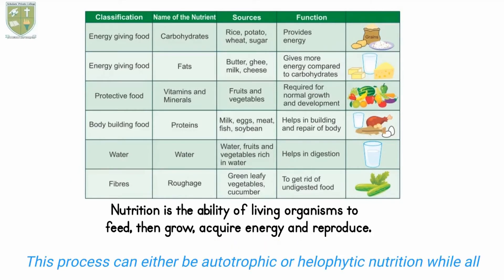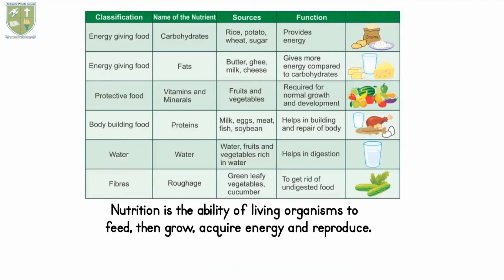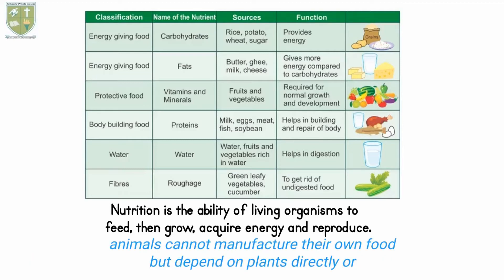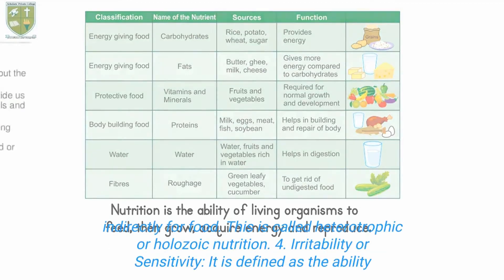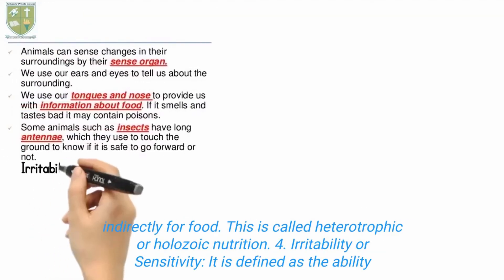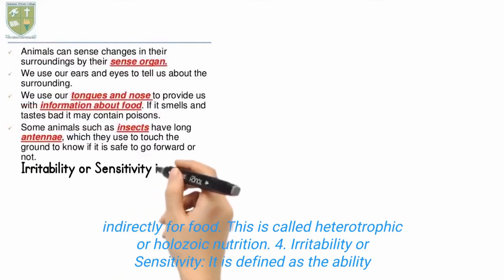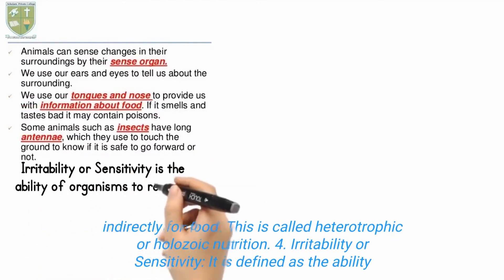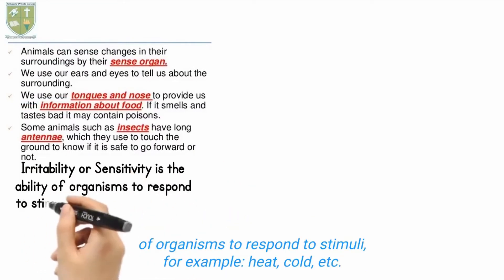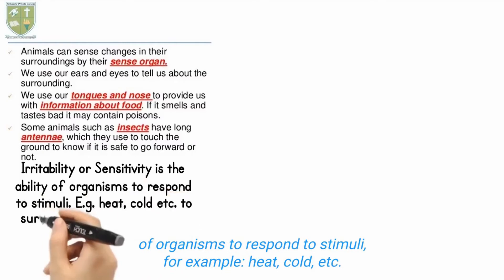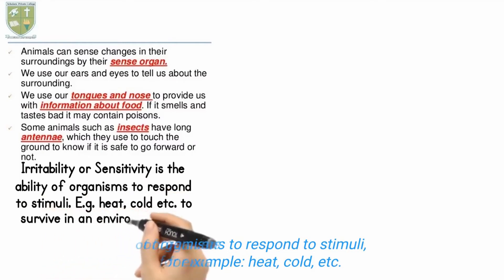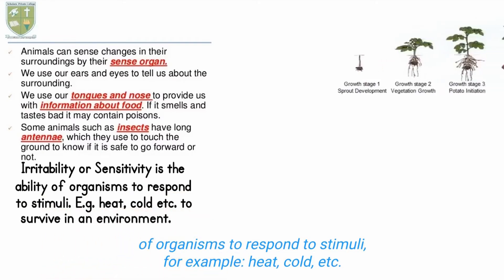This process can either be autotrophic or holophytic nutrition. All animals cannot manufacture their own food but depend on plants directly or indirectly. 4. Irritability or Sensitivity. It is defined as the ability of organisms to respond to stimuli, for example heat, cold, etc., in order to survive in an environment.